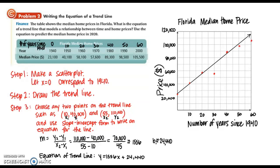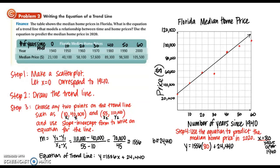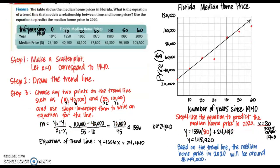Now we're going to use this equation to predict the median home price in 2020. The year 2020 is 80 years after 1940, so our x value is 80. Plugging 80 into the equation gives us 148,920. So the median home price in 2020 based on this trend line would be around $149,000 — we rounded our answer up to the next thousand.